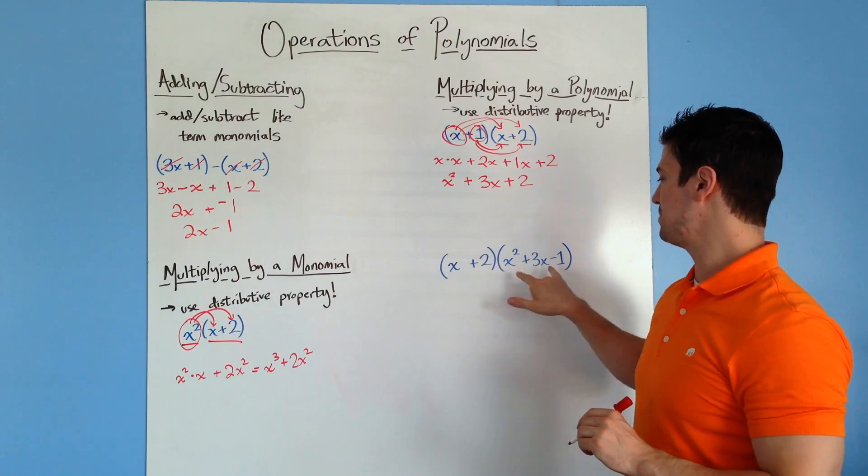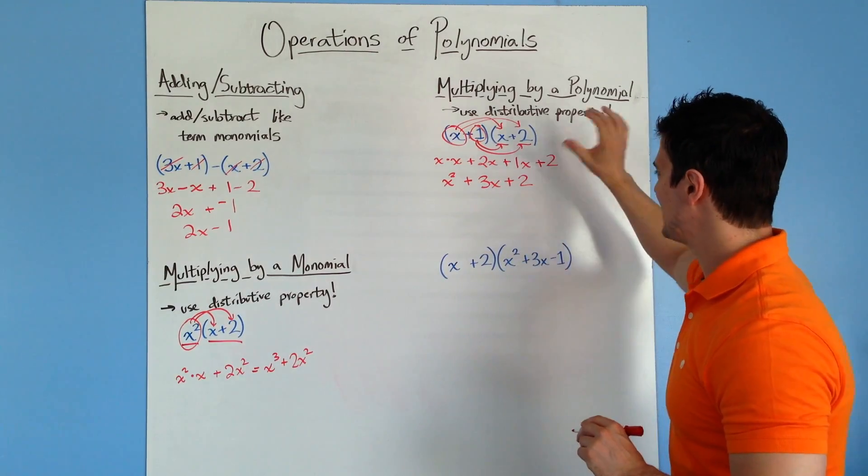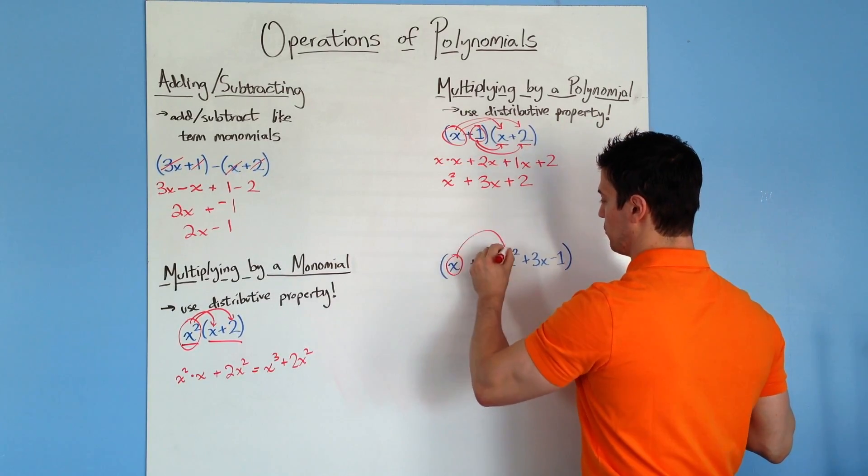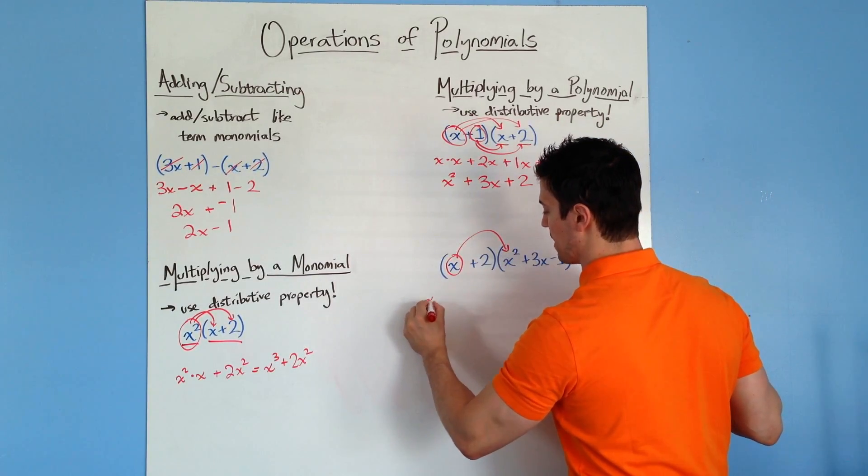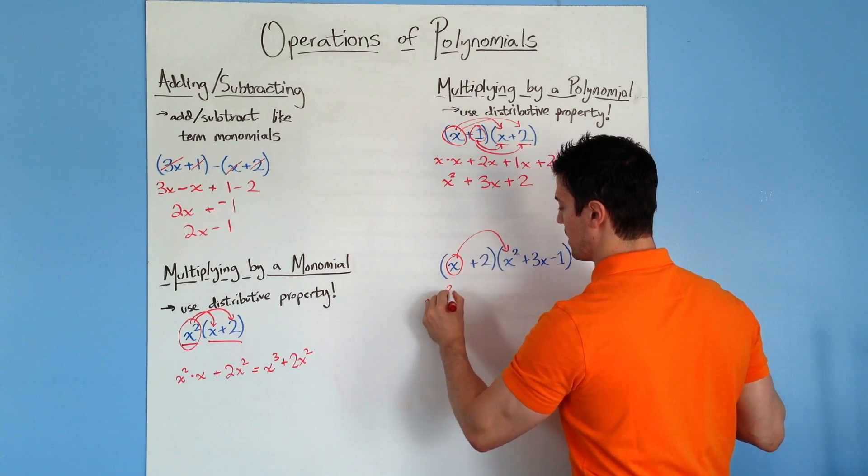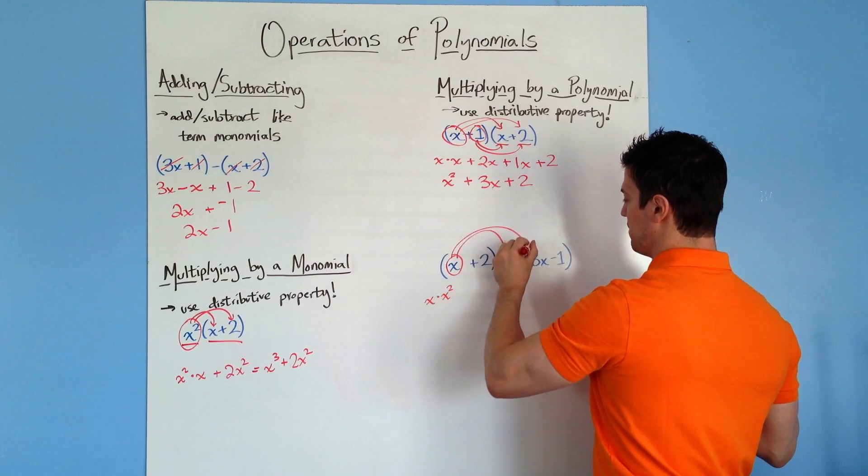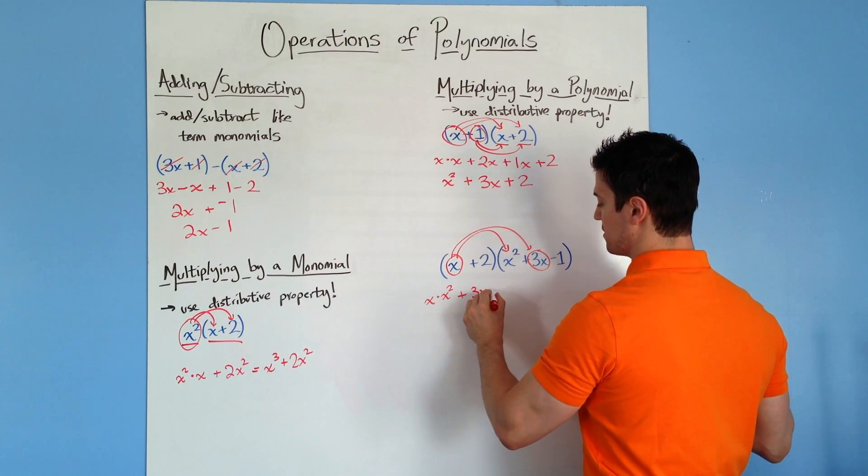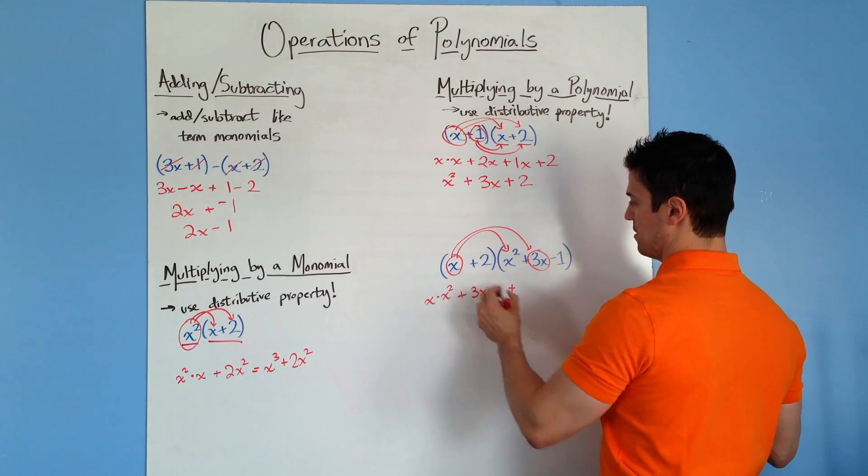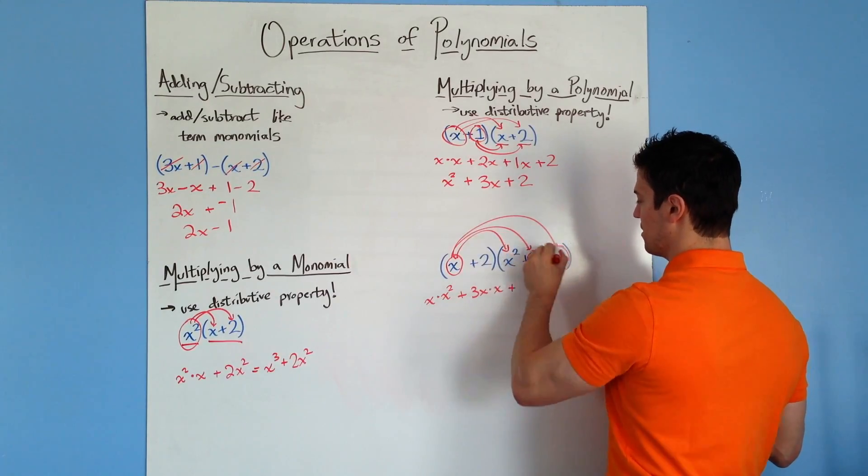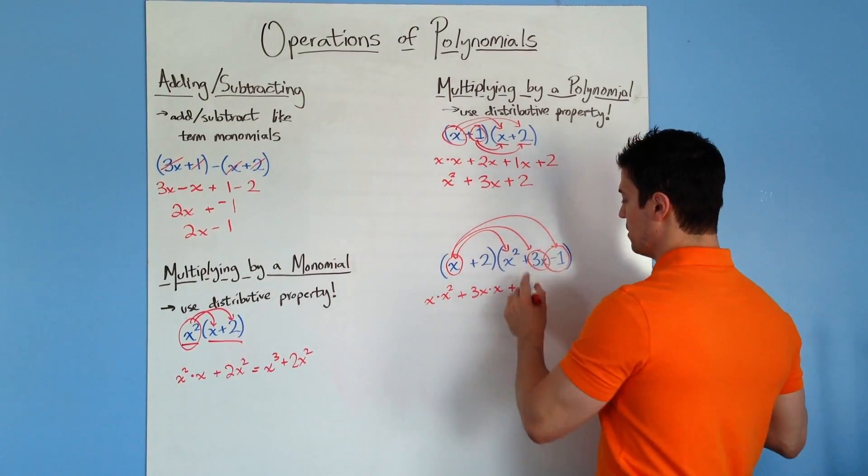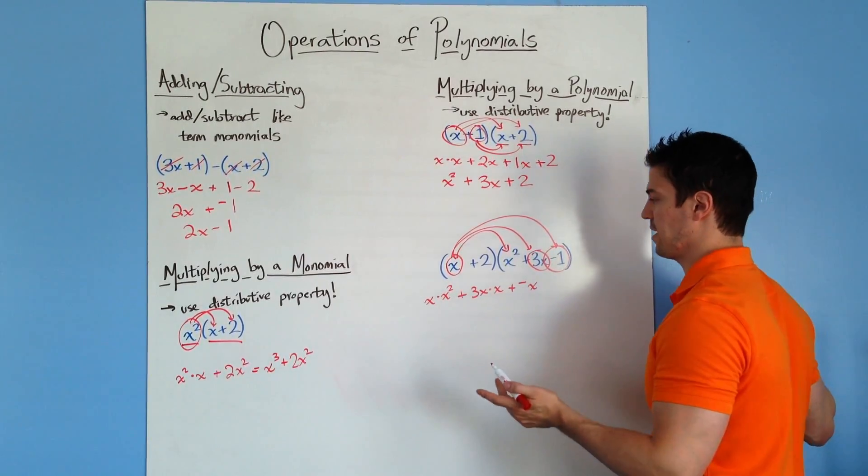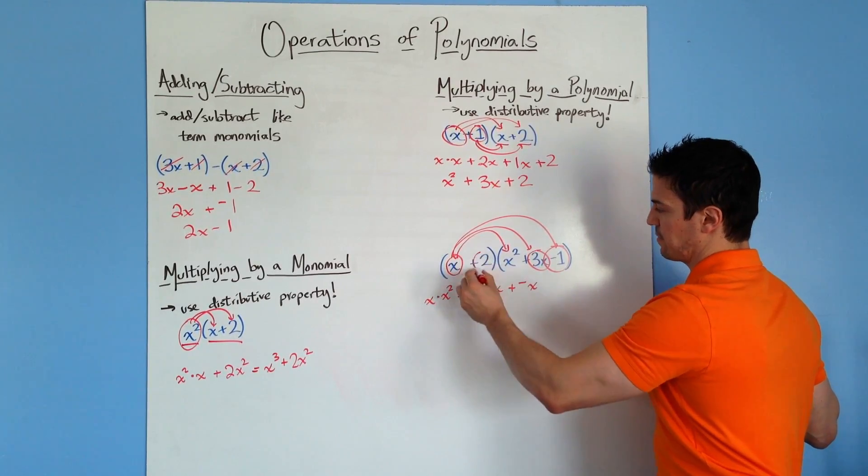Next, we have a binomial times a trinomial, which is the exact same process, only you just have to go through one extra step. So we're going to take this x and multiply it by the x squared. So you'll end up with x times x squared. Then x, you have to multiply it by the plus 3x. So I'm going to do plus 3x times x plus this x times the negative 1 right here. So it's going to be negative x or you can just do minus x. It doesn't matter. It's the same thing.